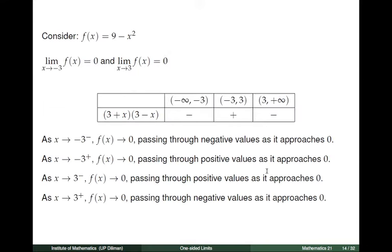To answer that question, let us first consider this function f of x given by 9 minus x squared. We can easily see the following observation: when you take the limit of f of x as x tends to negative 3, what you get is 0. Moreover, the limit of the same function as x tends to 3 is also 0. So in this case, the limits l are precisely 0. Now, 9 minus x squared is factorable; it factors as (3 plus x) times (3 minus x).